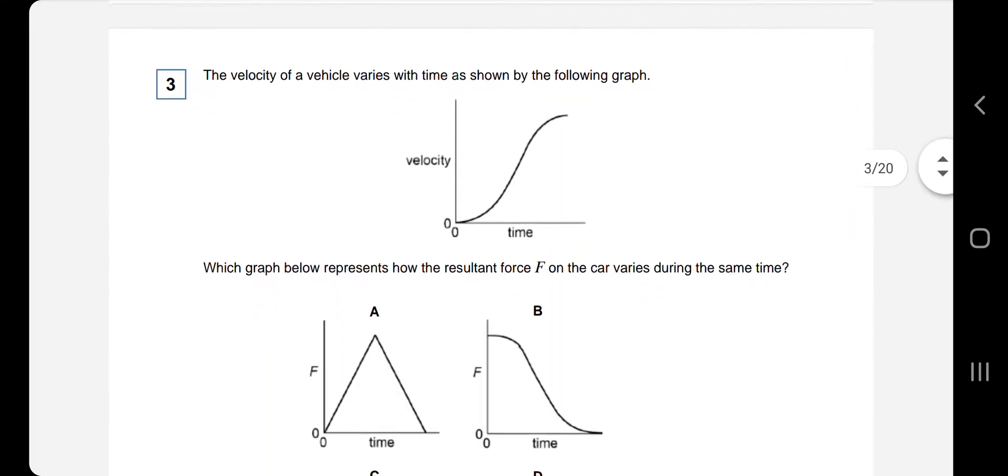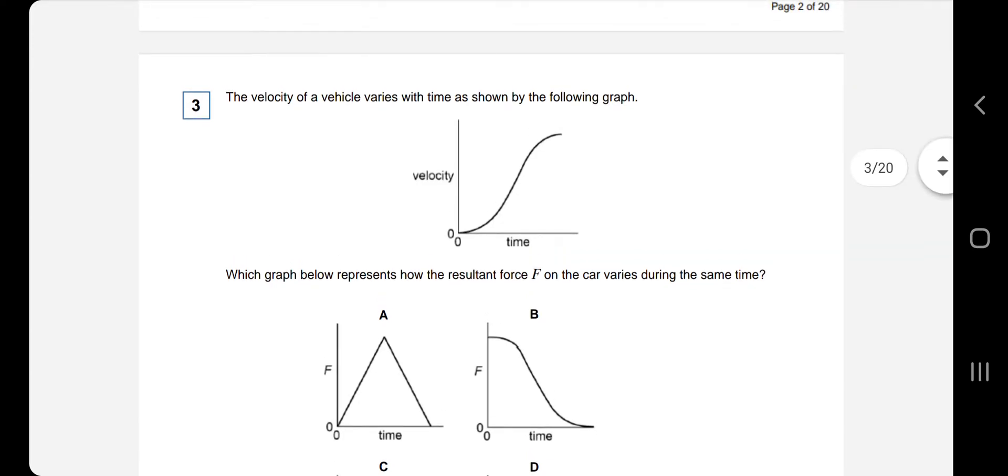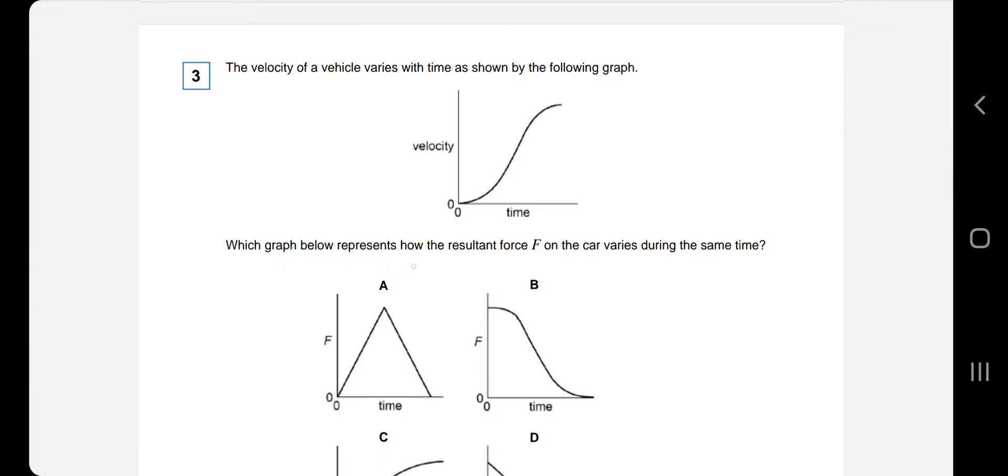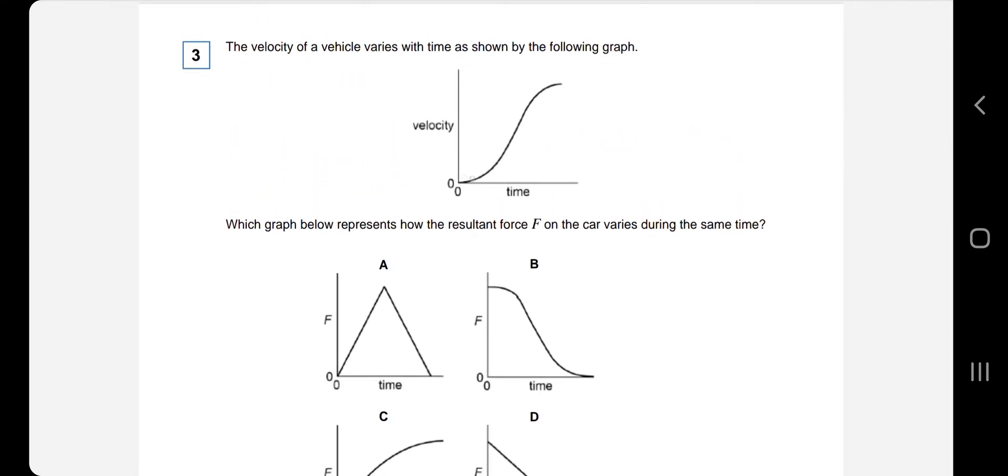Let's go to the next one. Quite a tricky one, this. We need to know, fundamentally, that the gradient of a velocity time graph is the acceleration. So this says the velocity of a vehicle varies with time as shown by the following graph. Which graph below represents how the resultant force F on the car varies during the same time. Let's have a look at this one. So as you can see, up to this midpoint, the gradient is increasing. So that means that the acceleration is increasing and in accordance with Newton's second law, resultant force is equal to MA. Force is proportional to acceleration.